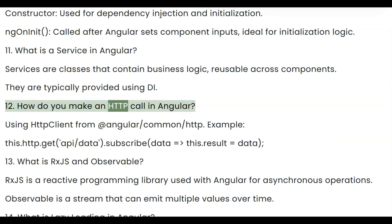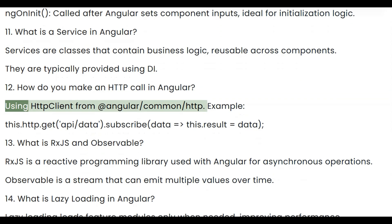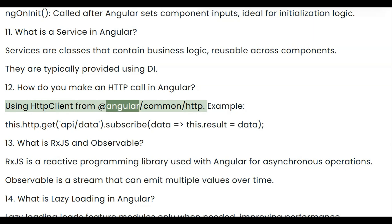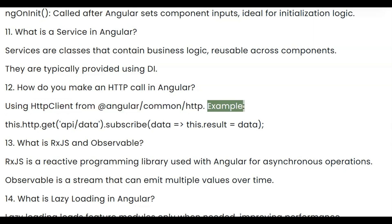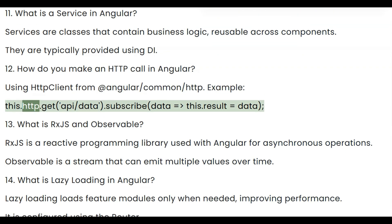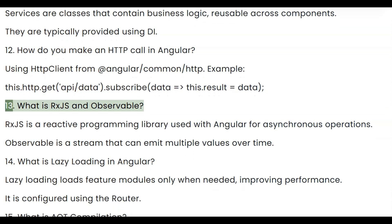Question 12: How do you make an HTTP call in Angular? Using HttpClient from @angular/common/http. You call this.http.get() and subscribe to the returned observable.